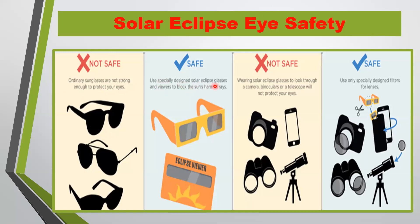What is safe? Specially designed solar eclipse glasses and viewers block the sun's harmful rays. This is a specially designed solar eclipse glasses and this is an eclipse viewer — you can see through it and it won't damage your eyes because they are specially designed for it. What is not safe? Wearing solar eclipse glasses to look through a camera, binoculars, or telescope will not protect your eyes. What is safe? Use only specially designed filtered lenses to look at the eclipse.